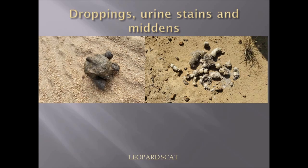Here we have leopard scat. Leopard scat can be dark if there is a lot of blood in the food they ate. It can also be a green colour, turning white as it gets bleached in the sun. It often contains hair, is relatively round, and usually has a point at one end. It can be various sizes — the picture on the right was taken of a very large scat collection of a large male leopard, also in iSimangaliso in KwaZulu-Natal.